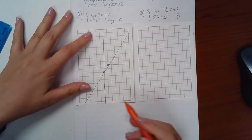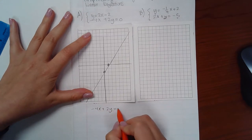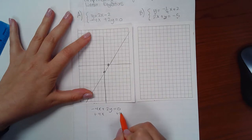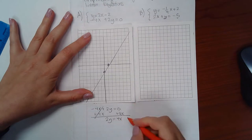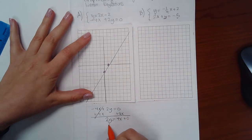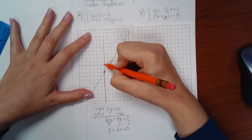Then now the second equation though, I do need to manipulate that so that I can graph it the exact same way. So the first thing I'm going to do is add 4x to both sides of the equation. I get 2y equals 4x. And since there's no constant, you could put plus 0.